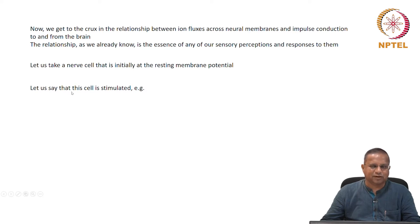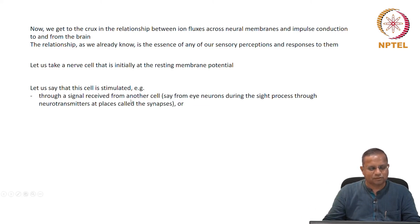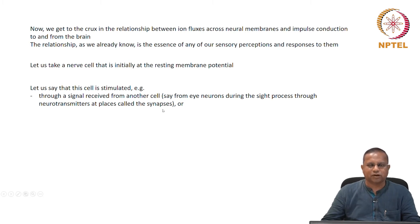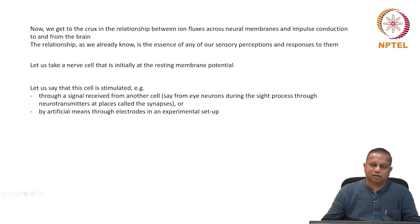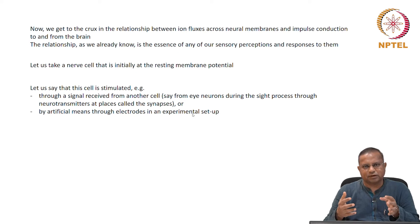Now, let us say at time t equals 0, this cell is stimulated — maybe by an image, by something pricking, maybe by a nice smell, a nice taste, and so on. The cell is stimulated through a signal received from another cell, say from eye neurons, through neurotransmitters at places called synapses. Or it could be by artificial means through electrodes in an experimental setup. So the stimulation could either be natural or it could be induced in an experiment by electrodes.